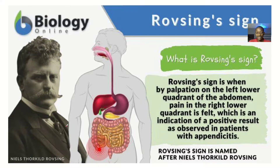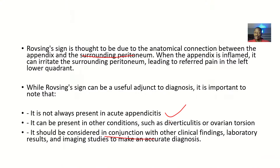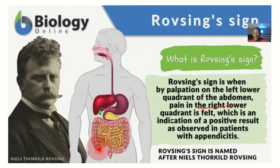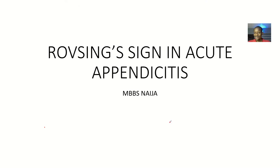Just to review: the Rovsing sign is when you palpate the left lower quadrant of the abdomen and there is referred pain in the right lower quadrant, which is an indication of a positive result as observed in patients with appendicitis. The sign was brought up by Niels Thorkild Rovsing, and we hope he is resting in peace. That is the Rovsing sign as seen in acute appendicitis.